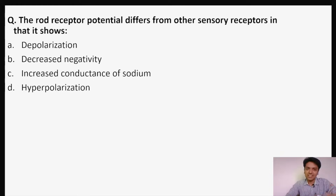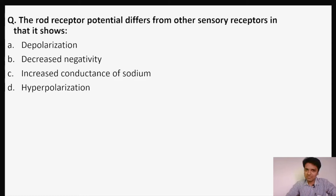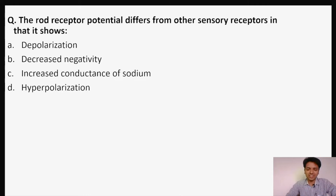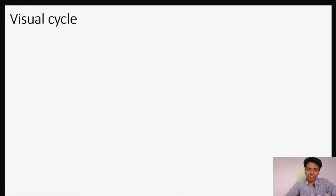The question is asking: in which way is the rod receptor potential different from the receptor potential of other sensory receptors? Is it showing depolarization, a decrease in negativity, an increase in conductance of sodium, or is it that the rod receptor potential shows hyperpolarization? If you know the answer, well and good, but let's discuss this question.